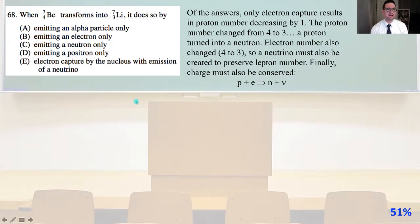Number 68, when beryllium with 7 neutrons and 4 protons transforms into lithium with 7 neutrons and 3 protons, it does so by. And of the answers, only electron capture results in proton number decreasing by 1. The proton number changed from 4 to 3. A proton turned into a neutron. Electron number also changed from 4 to 3.